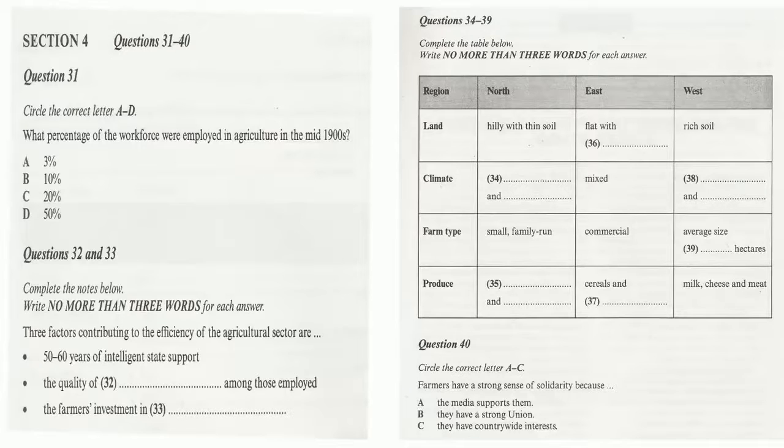How is this efficiency achieved? Well, my own view is that it owes a great deal to a history over the last 50 or 60 years of intelligent support by the state, mainly taking the form of helping farmers to plan ahead. Then the two other factors I should mention, both very important, are the high level of training amongst the agricultural workforce. And secondly, the recognition by farmers of the value of investing in technology.